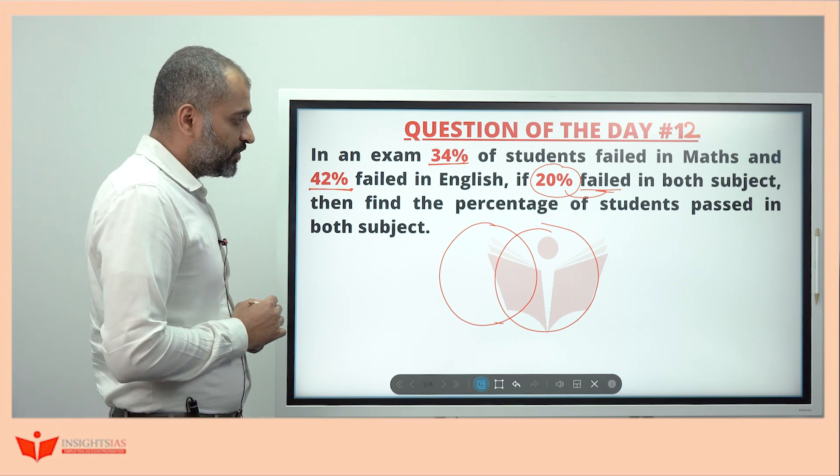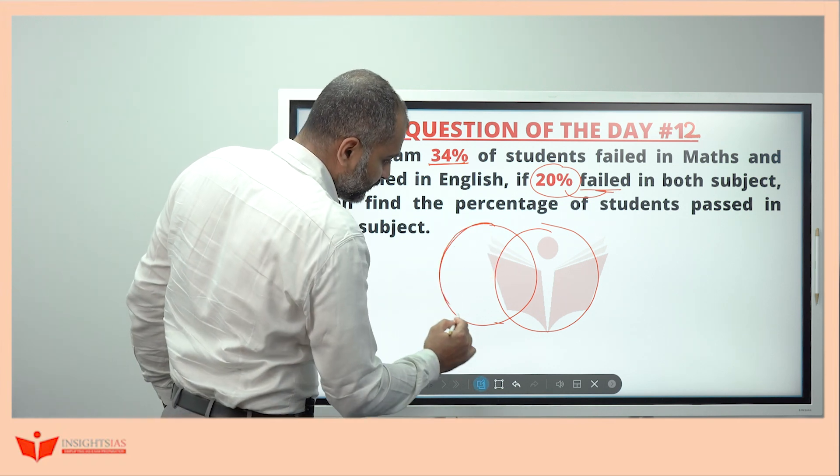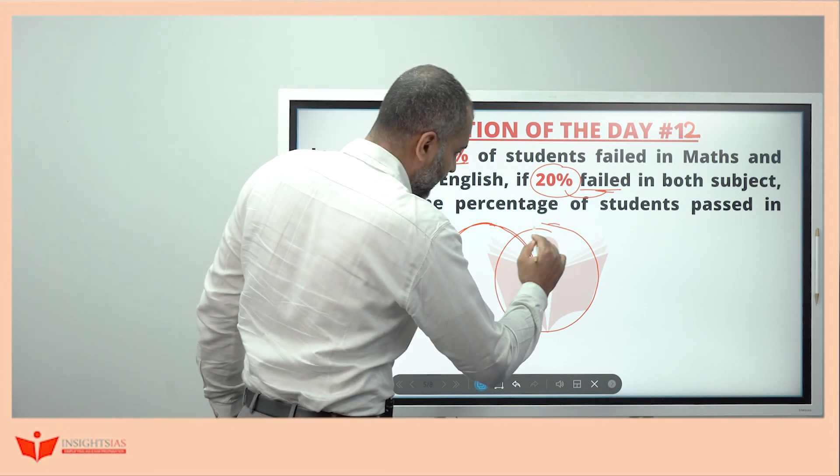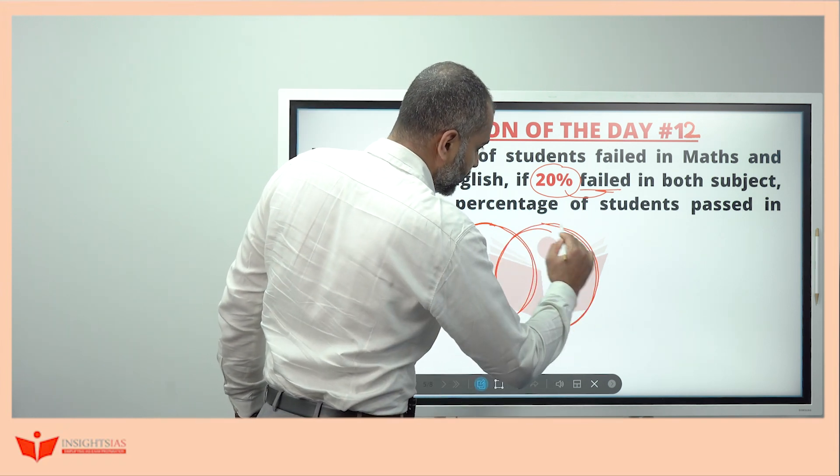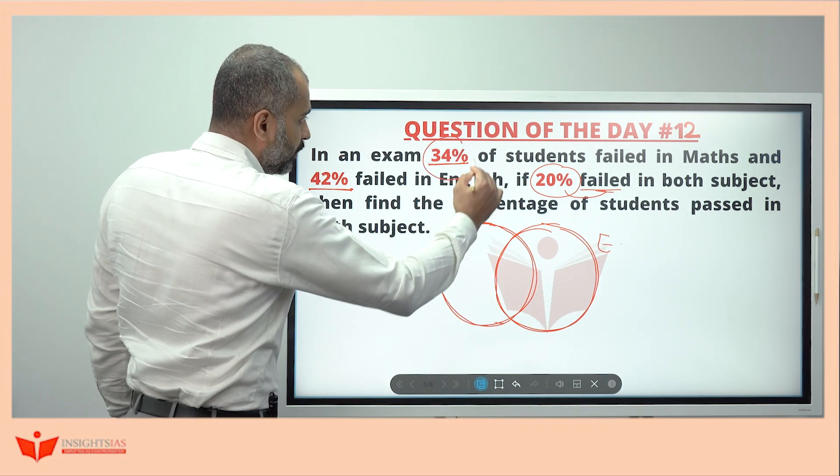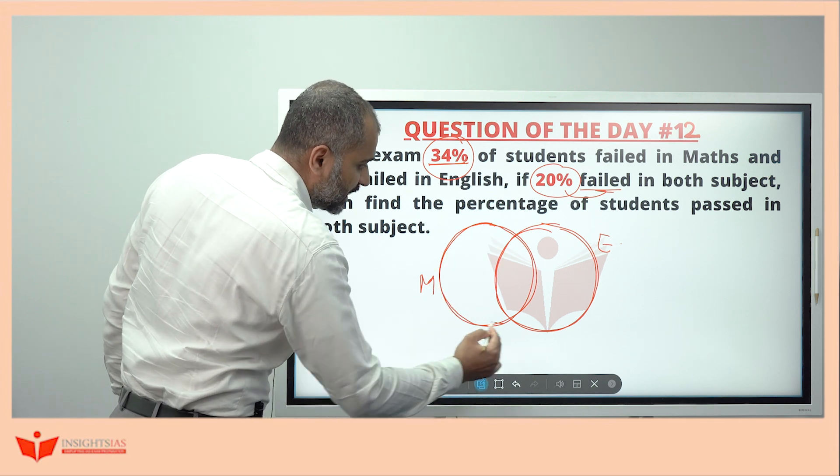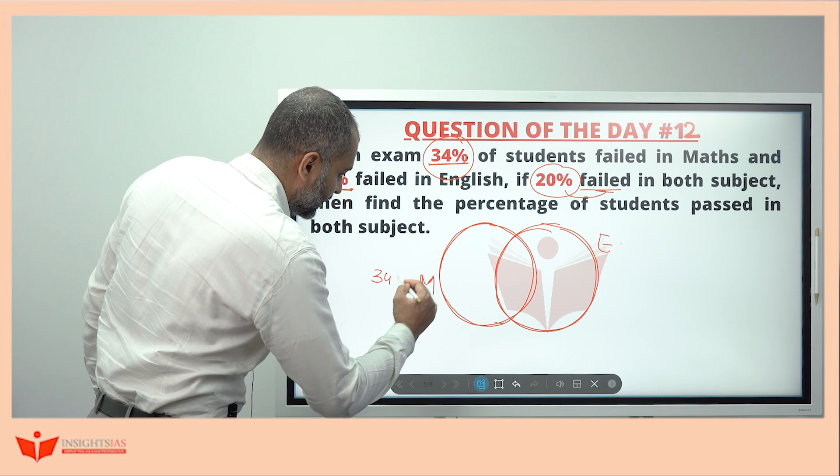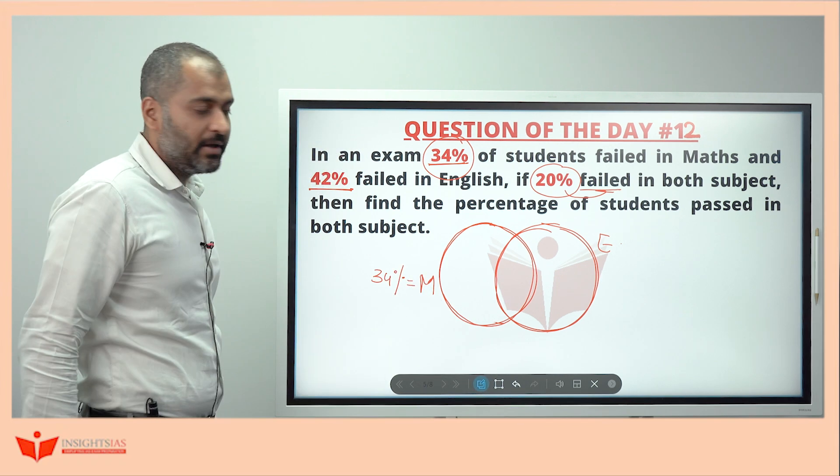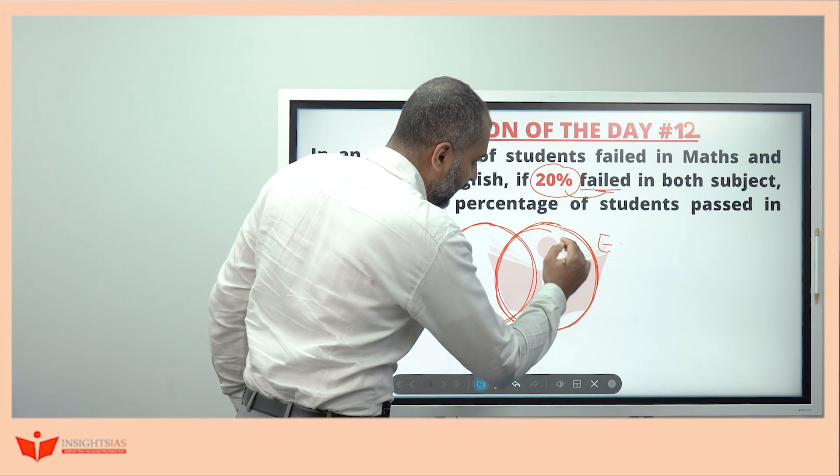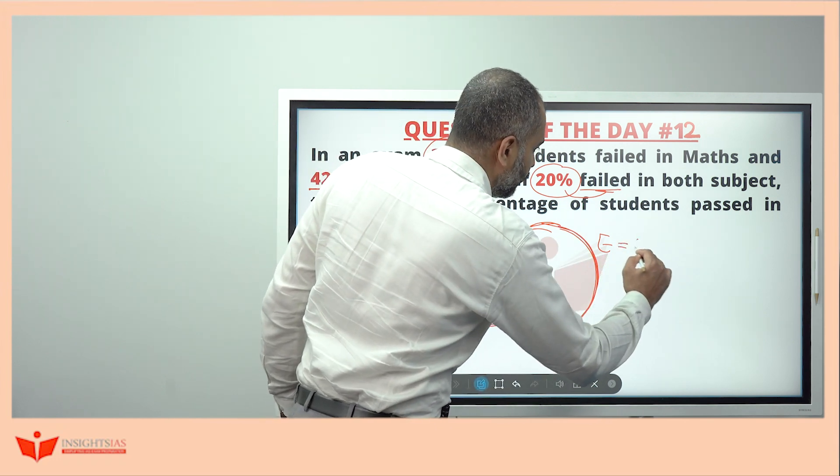In this Venn Diagram, this whole circle represents Maths and this whole circle represents English. In Maths, what is the percentage of students failed? 34%. So whatever the data which comes under this circle should be equal to 34%, and whatever the data which comes inside this circle, that is English, should be equal to 42%.